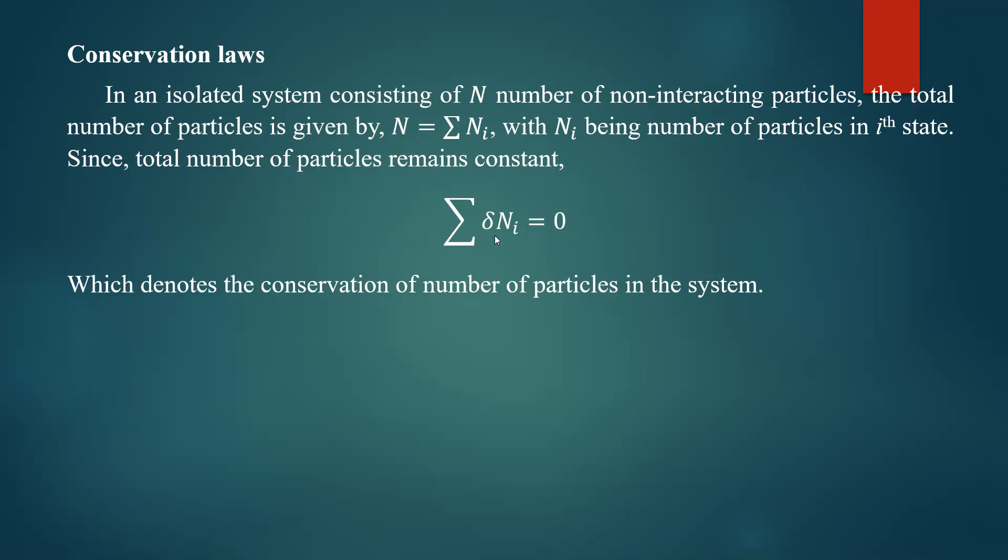What this represents is: summation of delta ni can be written as dn1 plus dn2 plus dn3, and so on. It is representing the particles going from one state to another state. Suppose a change in n1 is taking place — suppose two states are there. Let us take a simple example: two states.